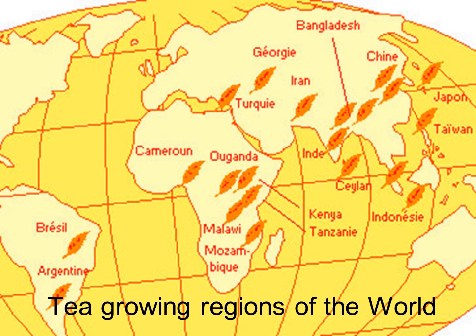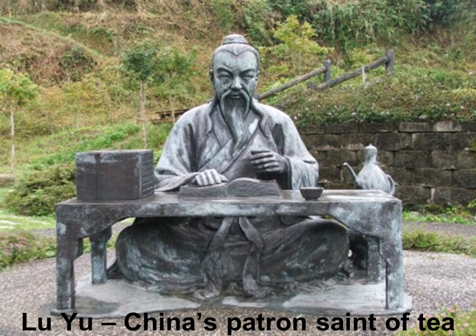Here's a map of where tea is grown today around the world. If you're wondering why the words don't look right, it's a French map. Tea started in Asia and then it spread throughout the Middle and Near East, and it has also been taken to Africa and more recently to South America. You'll notice Europe, the northern part of Asia, North America, and Australia have no tea grown there.